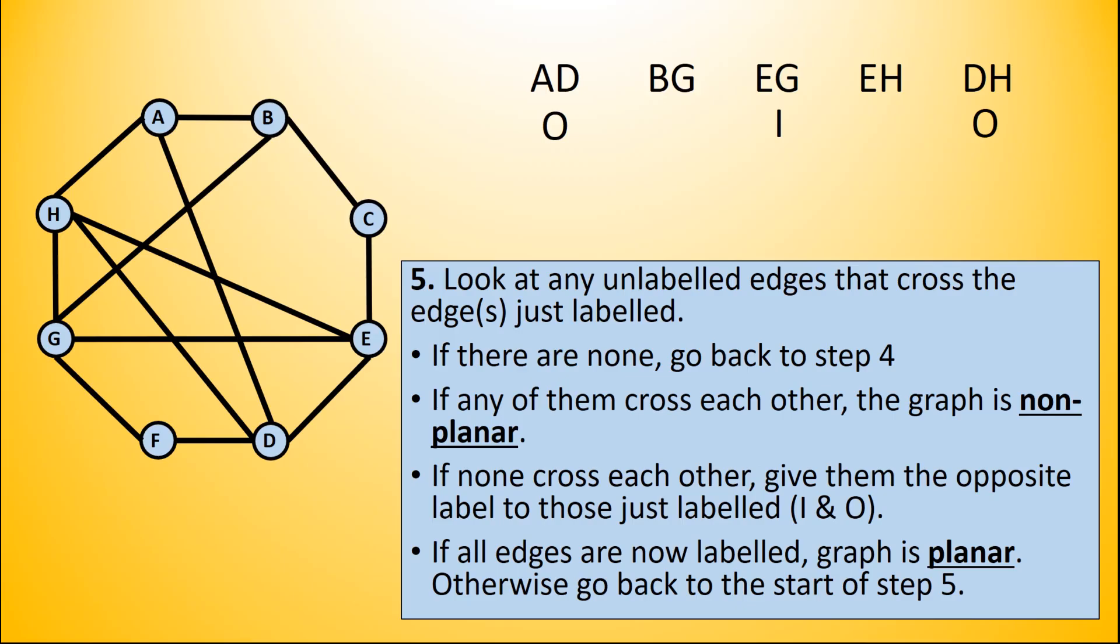We're going to look at any unlabeled edges that cross the edges that have just been labeled. So AD and DH are the ones that have just been labeled, and we're going to look at any lines that cross those. BG and EH are the only unlabeled ones. We look at those two that are in red. We notice from the second part of step 5: if any of them cross each other, the graph is non-planar. The two red lines are crossing each other, therefore this is a non-planar graph.